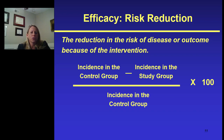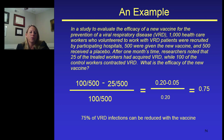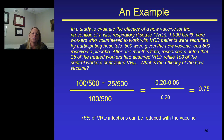We could also calculate the risk reduction, which is essentially the difference in risks between the treatment arms divided by the risk in the control. For example, a study evaluated the efficacy of a new vaccine for the prevention of a viral respiratory disease. 1,000 healthcare workers who volunteered to work with viral disease patients were recruited. 500 were given the new vaccine and 500 were given a placebo vaccine. After one month, 25 of the vaccinated workers had acquired the viral respiratory disease compared to 100 who received the placebo.